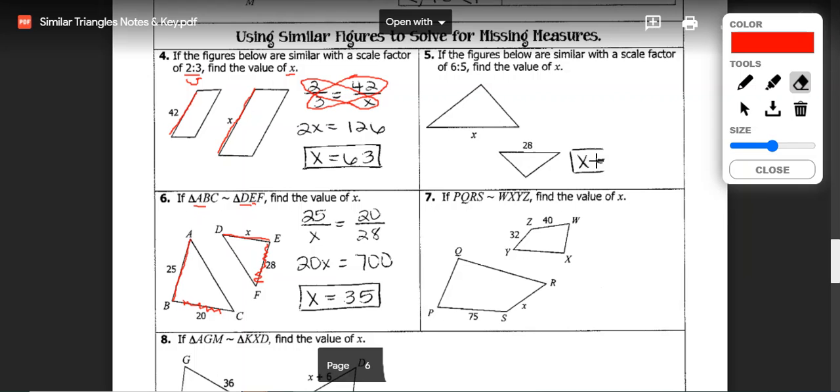Let's see how you did. You should have gotten X is equal to 33.6 for 5 and for 7 you should have gotten X is equal to 60.